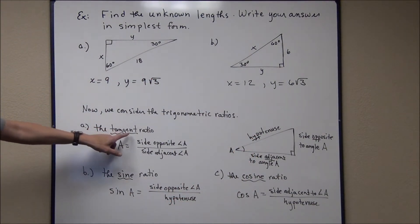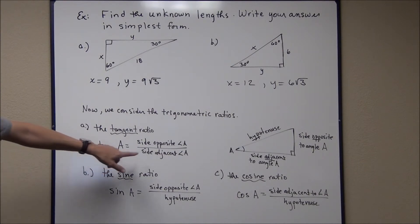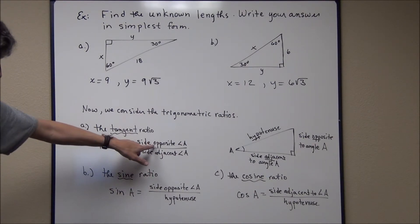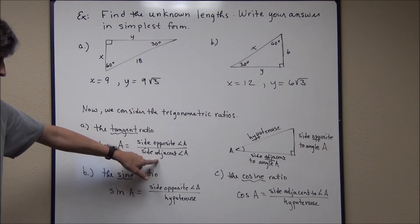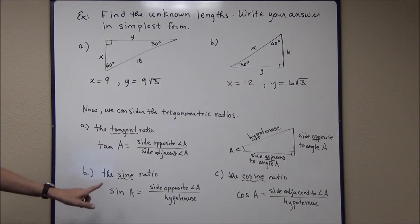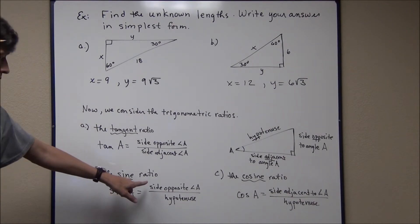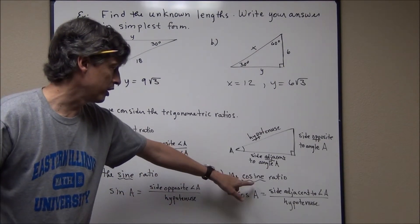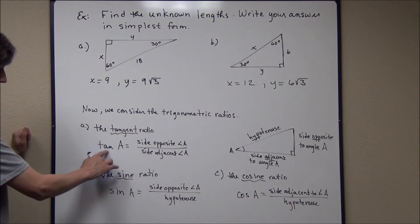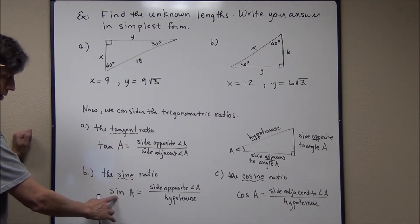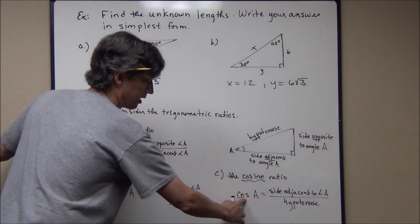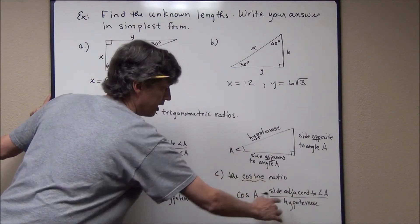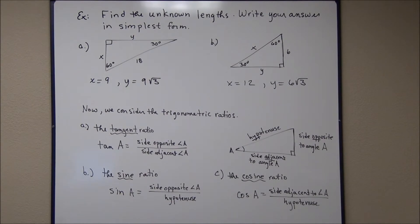The tangent of angle A is the ratio of the opposite side to the adjacent side. The sine of angle A (abbreviated 'sin') is the ratio of the opposite side to the hypotenuse. The cosine of angle A (abbreviated 'cos') is the ratio of the adjacent side to the hypotenuse.